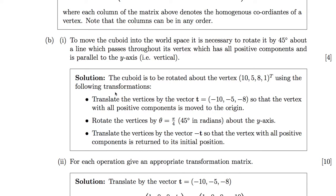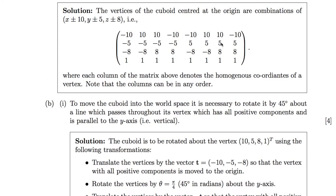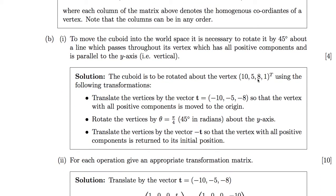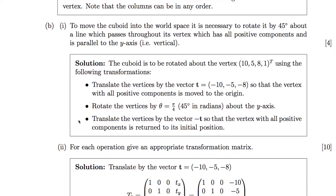Part B is about moving the cuboid into world space. It's necessary to rotate it by 45 degrees about a line passing through the vertex with all positive component values — which is (10, 5, 8). We translate all vertices by the vector (−10, −5, −8), moving that vertex to the origin. Next we rotate all vertices by pi over 4 about the y-axis. Finally we translate back by the positive vector, returning the vertex of all positive components to its initial position.